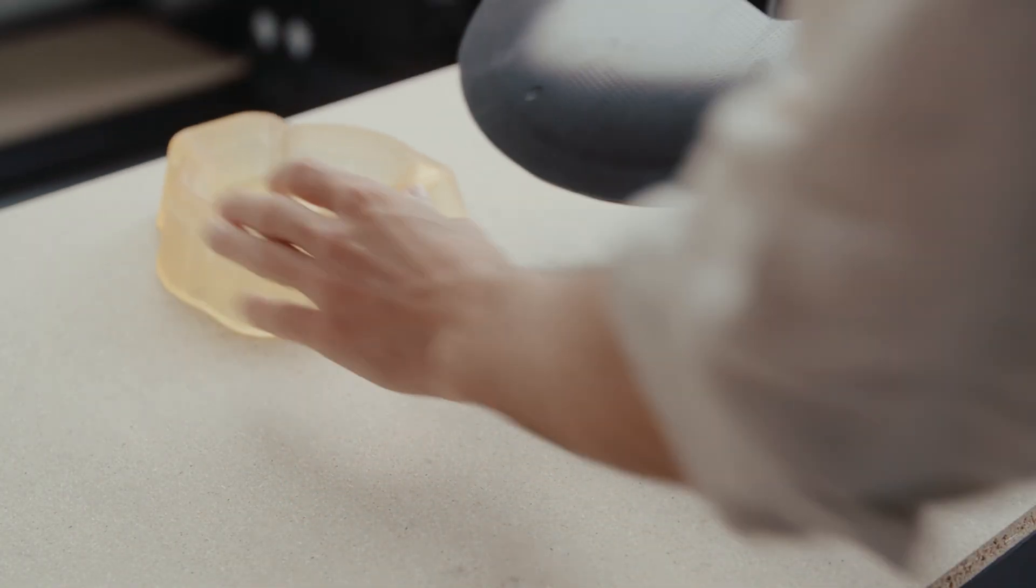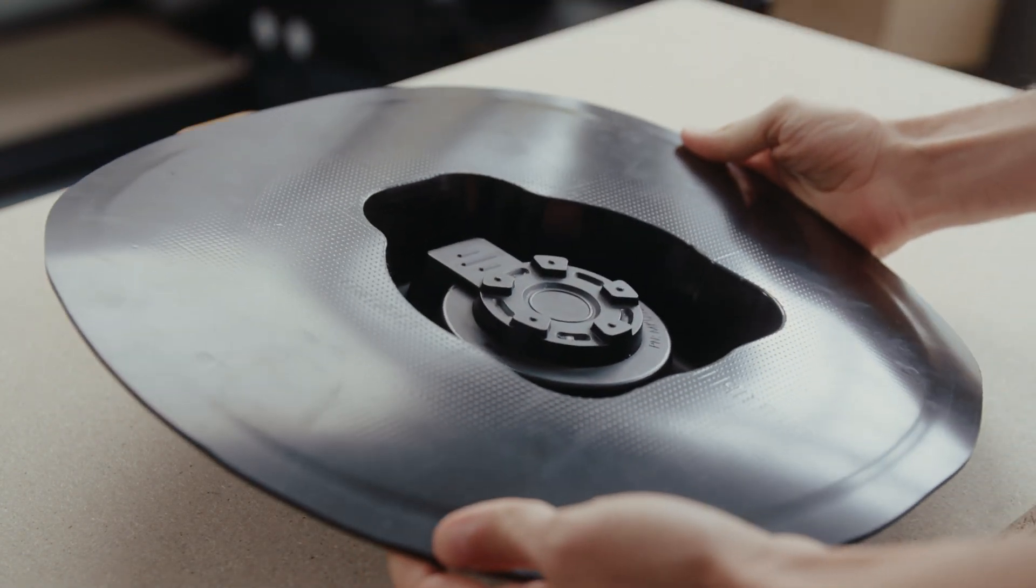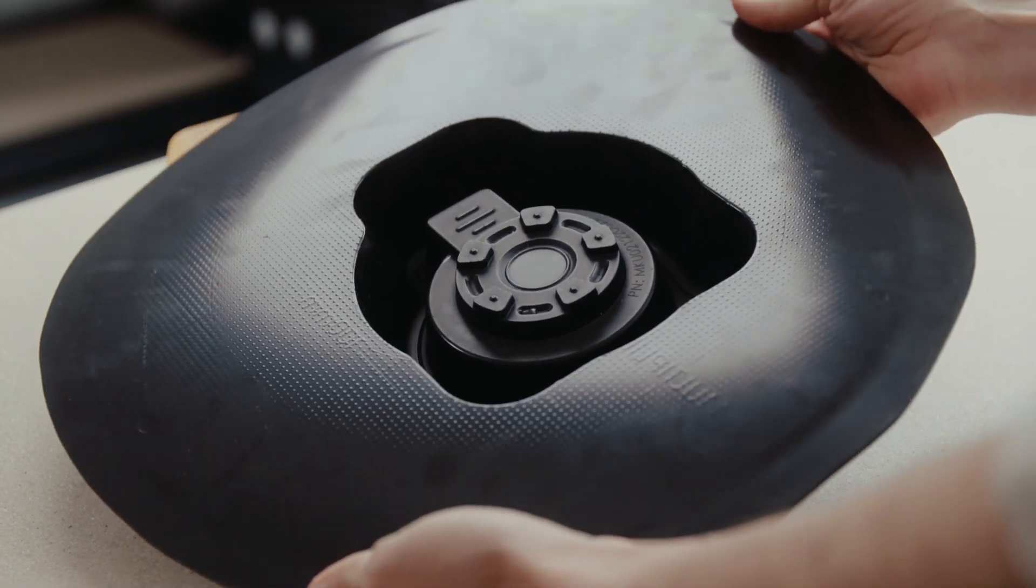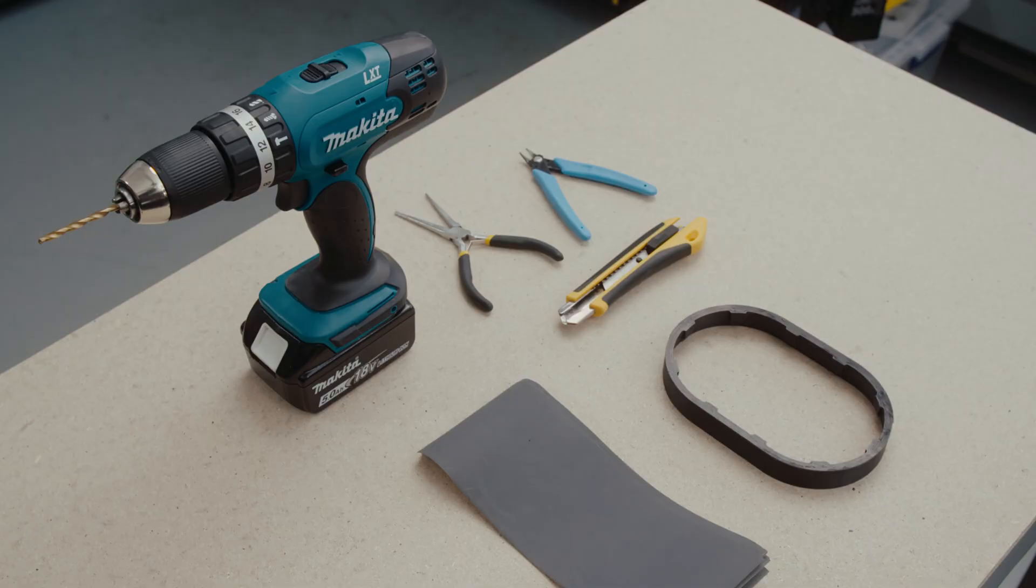Now it's time for post-processing. Once we have the final part, we need to remove the excess material. There are many ways to do it depending on the sheet material you used and its thickness.